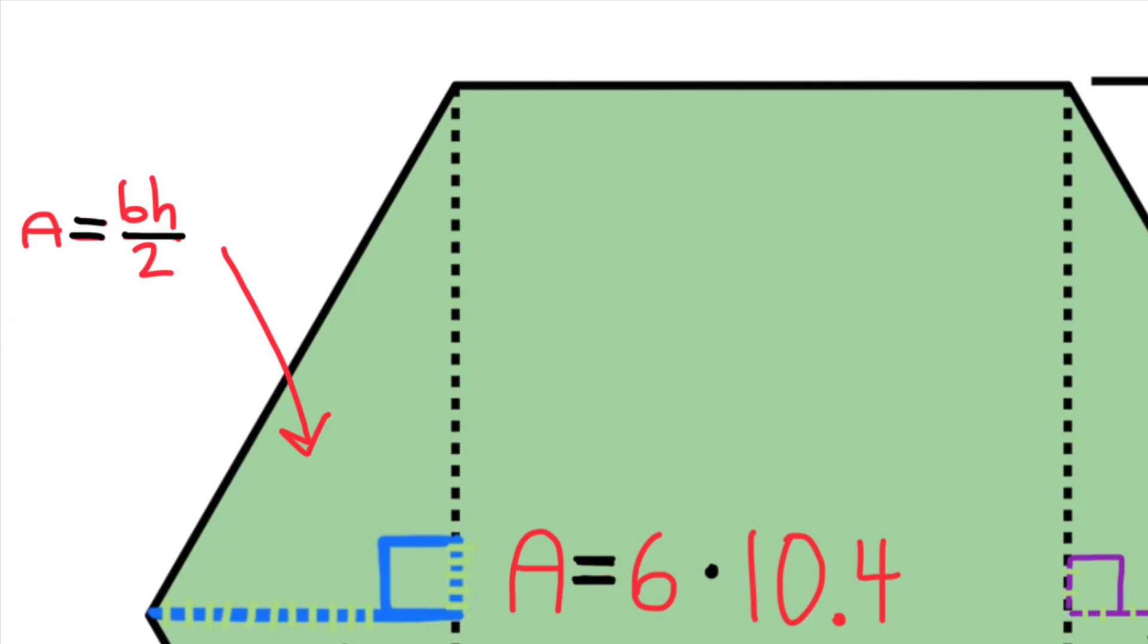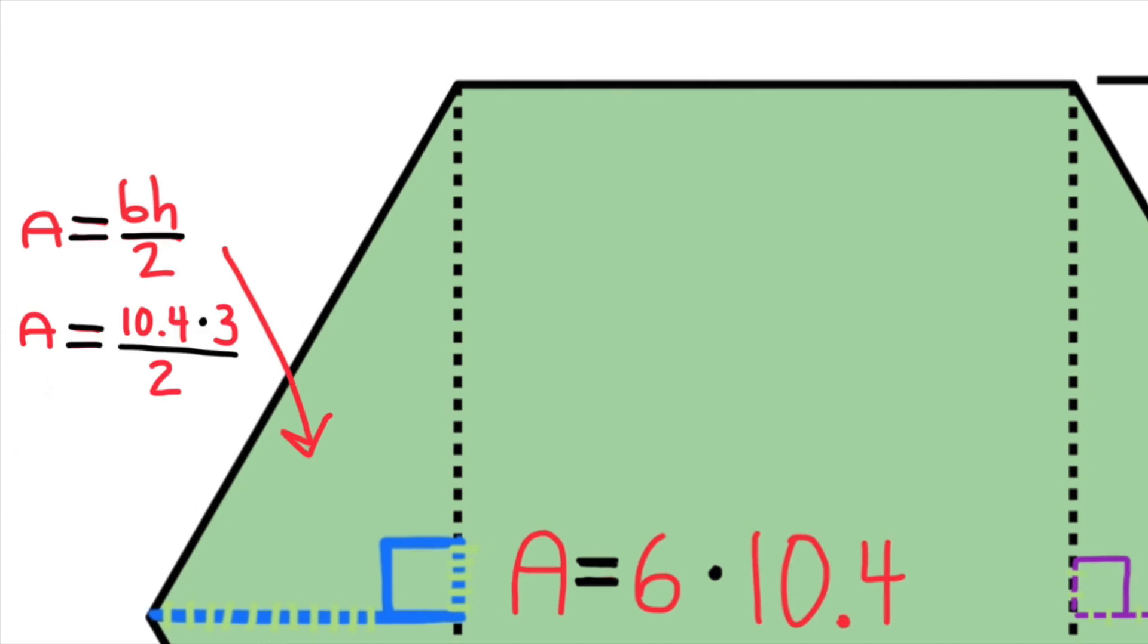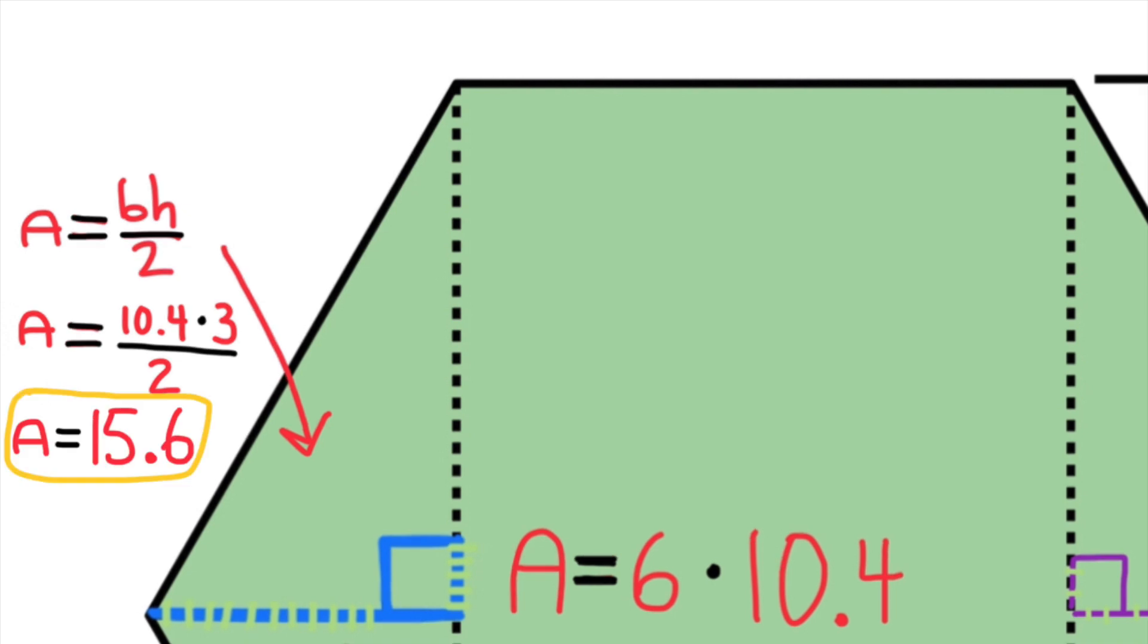To find the area of the triangles, we would multiply base times height divided by 2, or half of base times height. The base is 10.4 inches, and the height is 3 inches. So 10.4 times 3 divided by 2, or half of 10.4 times 3. Half of 10 is 5, and 5 times 3 is 15. Half of 0.4 is 0.2, and 0.2 times 3 is 0.6. The area of each of these two triangles is 15.6 inches.